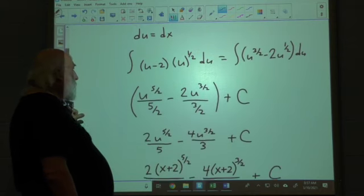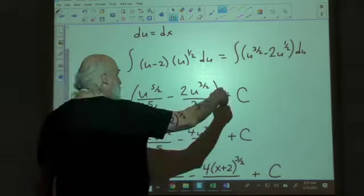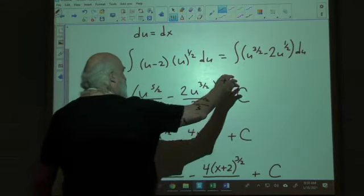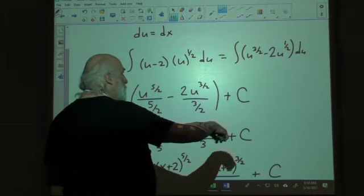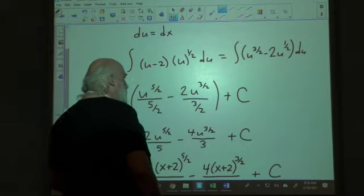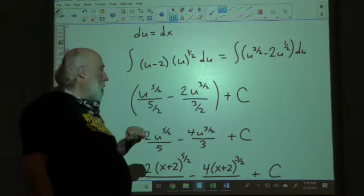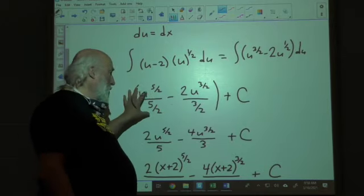Then we go ahead and integrate that. And again, as integration asks us to do, you increase by 1 because it's the anti-derivative, then you're going to divide by the new denominator, 5 halves. Same thing here, 1 half plus 1 is 3 halves, and then we divide that by the new denominator, 3 halves. And so we get this ugliness plus c.